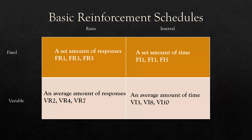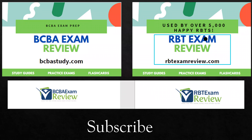So wrapping up: when you're doing these questions, start by breaking them down piece by piece — fixed or variable, ratio or interval, fixed or average, time or responses. Fixed ratio: set amount of responses. Variable ratio: average amount of responses. Fixed interval: set amount of time. Variable interval: average amount of time. Very straightforward — don't overcomplicate our basic schedules. Next week we will cover compound schedules, so make sure you subscribe so you always get our notifications.